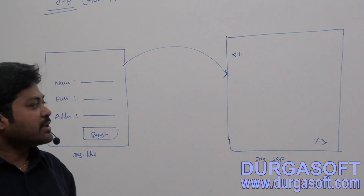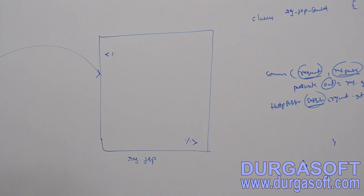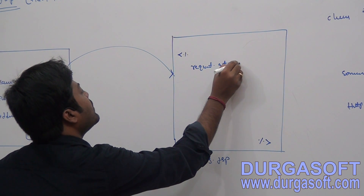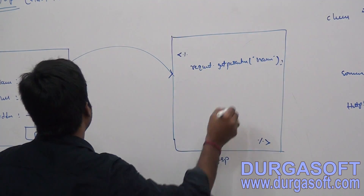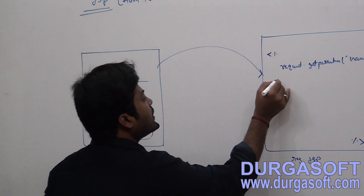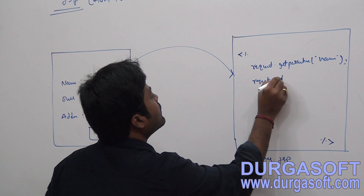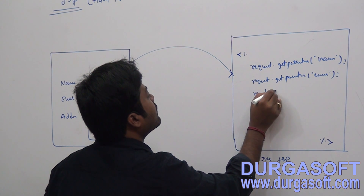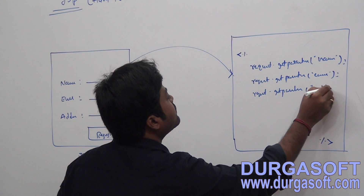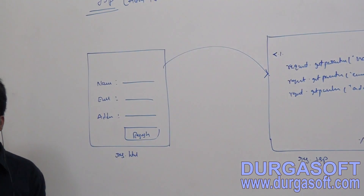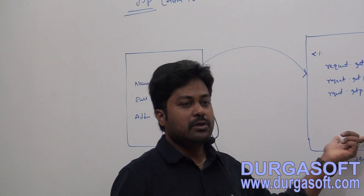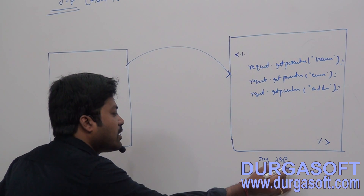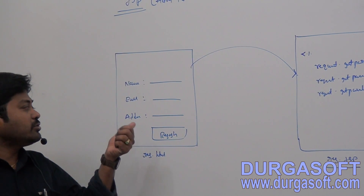Multiple objects are made available through the service method. If you require a request object, you can directly call request.getParameter("name") to read the name attribute. Similarly, request.getParameter("email") and request.getParameter("address"). Once you've read the data, you can pass it to the model layer and store it into the database.